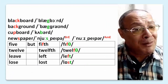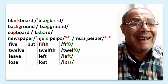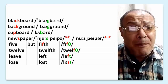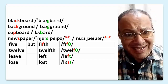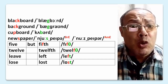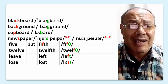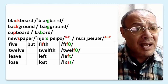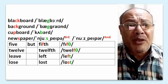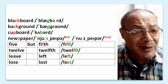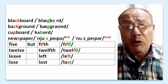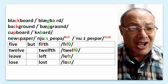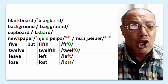More examples: blackboard, background, cupboard, newspaper — in British English 'newspaper', in American English 'newspaper'. Five but fifth, twelve but twelfth, leave — left, lose — lost.